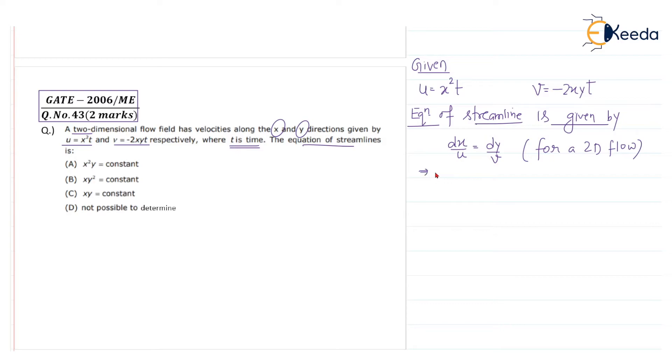Now we substitute the values: dx by u, where u is x squared t, equals dy by v, where v is minus 2xy t. We can cancel one x here and one x here, t also gets cancelled. So what remains is dx by x equals minus one by two dy by y.